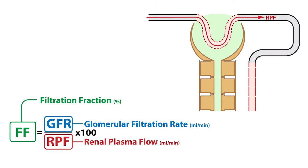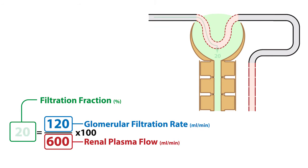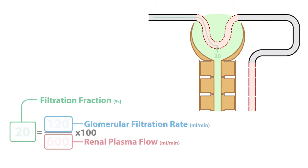So what's the average filtration fraction? GFR and renal plasma flow average 120 and 600 milliliters per minute respectively. These values give us a filtration fraction of 0.2 or 20% when multiplied by 100.